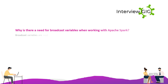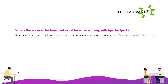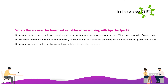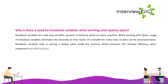Why is there a need for broadcast variables when working with Apache Spark? Broadcast variables are read-only variables present in the memory cache on every machine. Using broadcast variables eliminates the necessity to ship copies of a variable for every task, so data can be processed faster. Broadcast variables also help store a lookup table inside memory, which enhances retrieval efficiency compared to an RDD lookup.